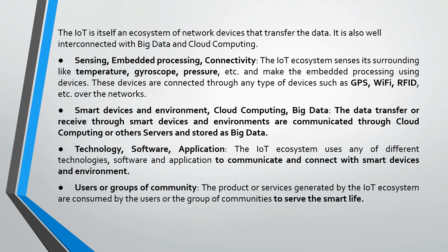Smart devices and environment, cloud computing, and big data are key entities of the IoT ecosystem. Data transferred or received through smart devices and the environment is communicated through cloud computing and other servers, and stored as big data. Technology software applications are needed to communicate and connect with smart devices and the environment. These are the core capabilities required to operate the IoT ecosystem, and they are the final beneficiaries of IoT architecture as well.